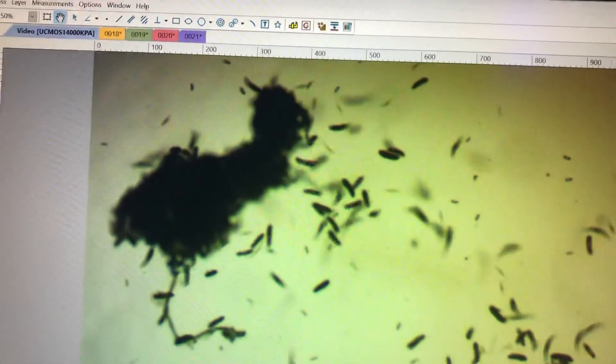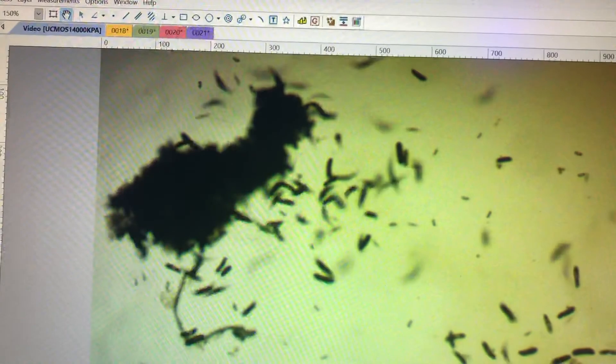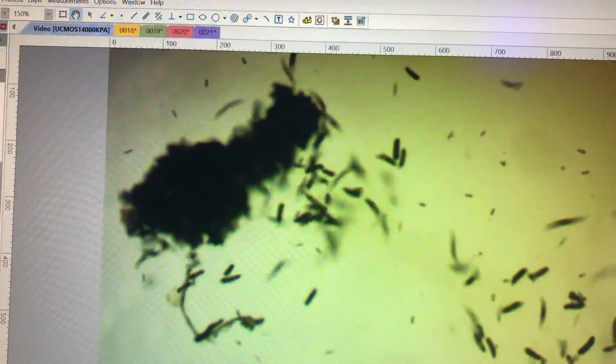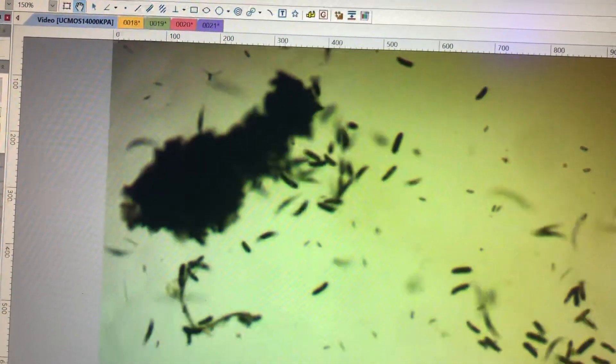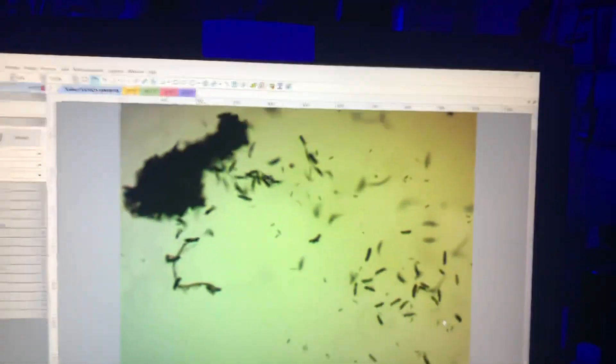So questions about whether changes in alkalinity, phosphates, temperature, salinity, potassium, iodine, pH, whether those changes cause RTN, they do not. This causes RTN right here. It's an infection.